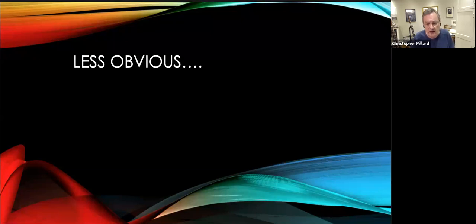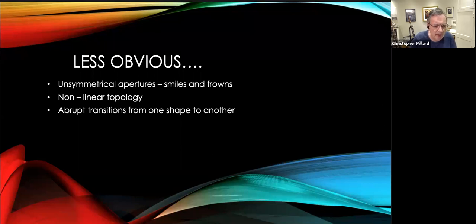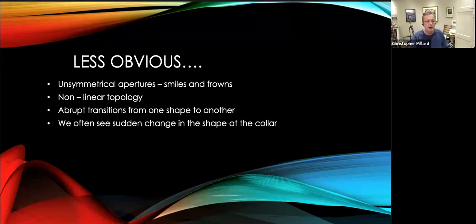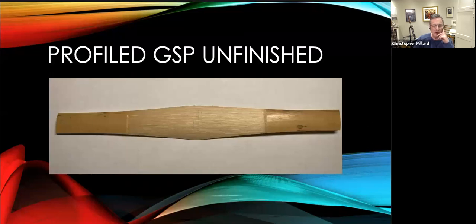And in some ways, the process of building a reed blank negates the original identity of Arundo donax as a vertical tube of cane. As we'll see, how we manage the deformation process during our blank formation is important to the lasting structure of the reed over its full performing life. So, here are some points to focus on. Unsymmetrical apertures. You've seen them all. They smile or they frown. Non-linear topology. Abrupt transitions from one shape to another. And this happens most frequently at the transition from the tube to the blades. We often see sudden changes in shape, in topology, at the collar.